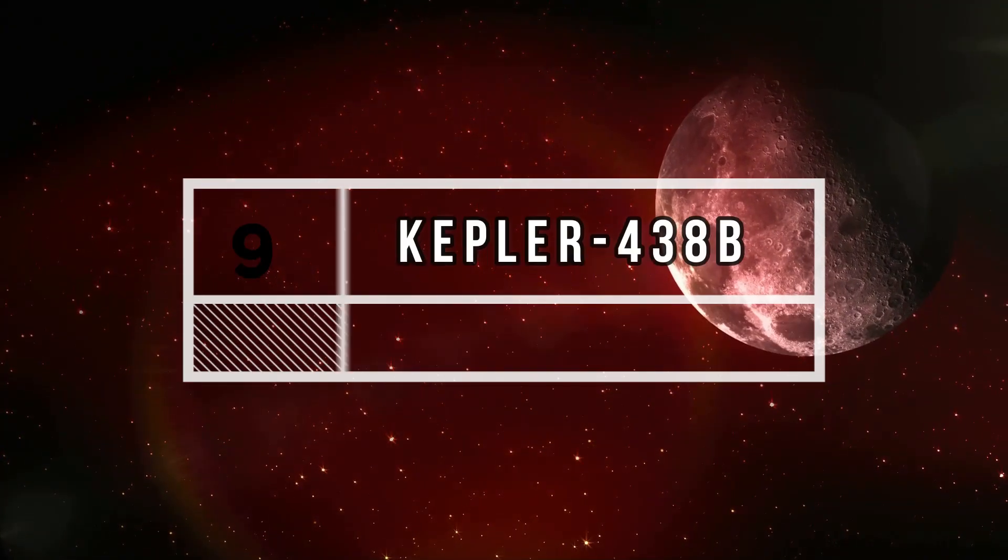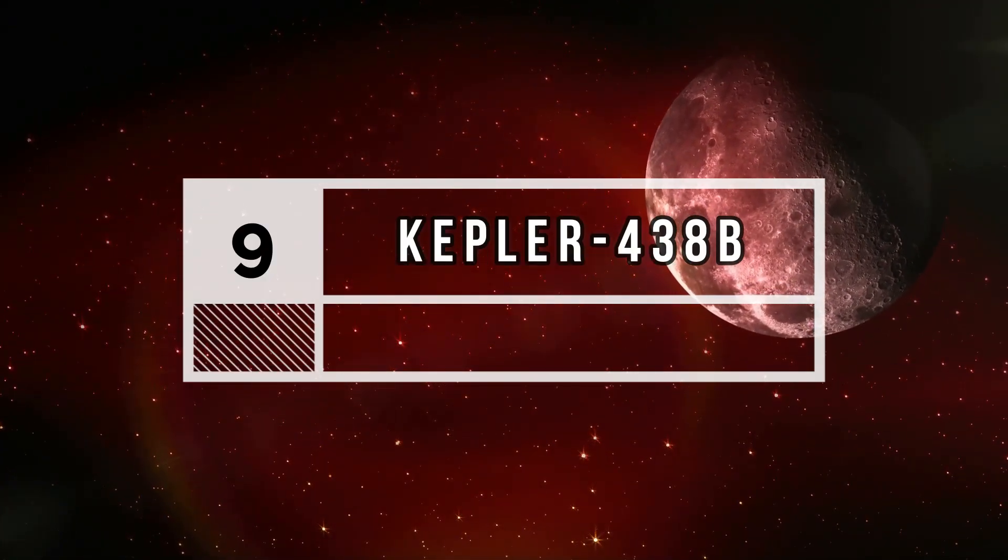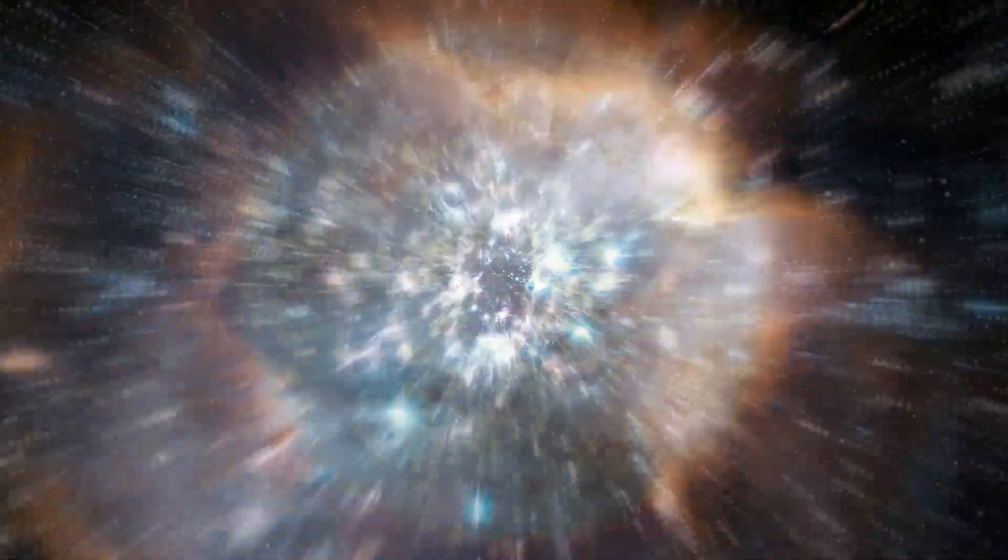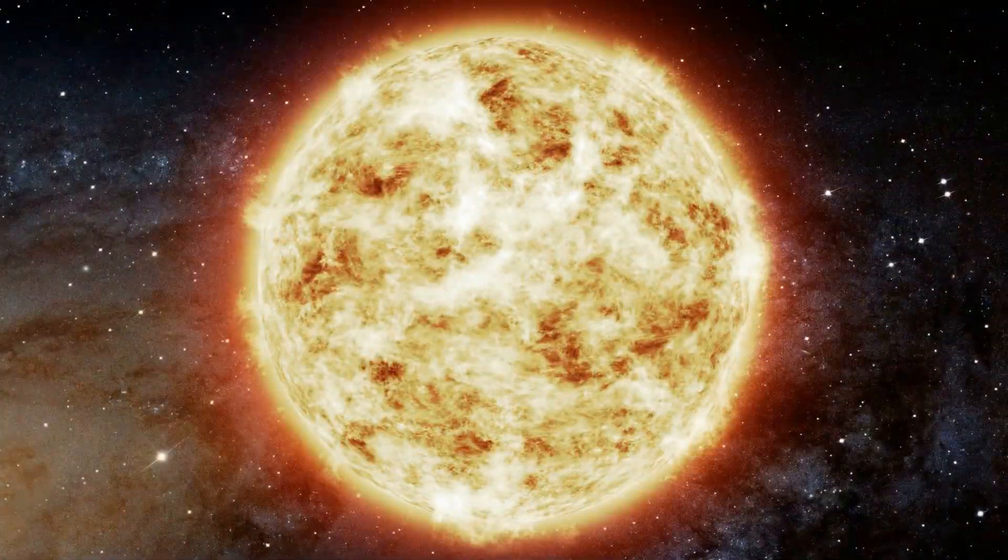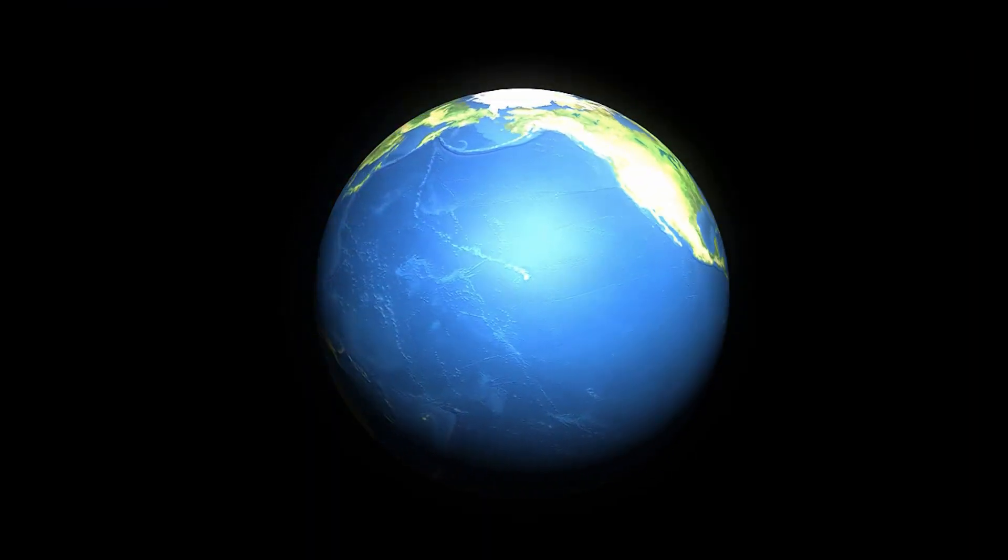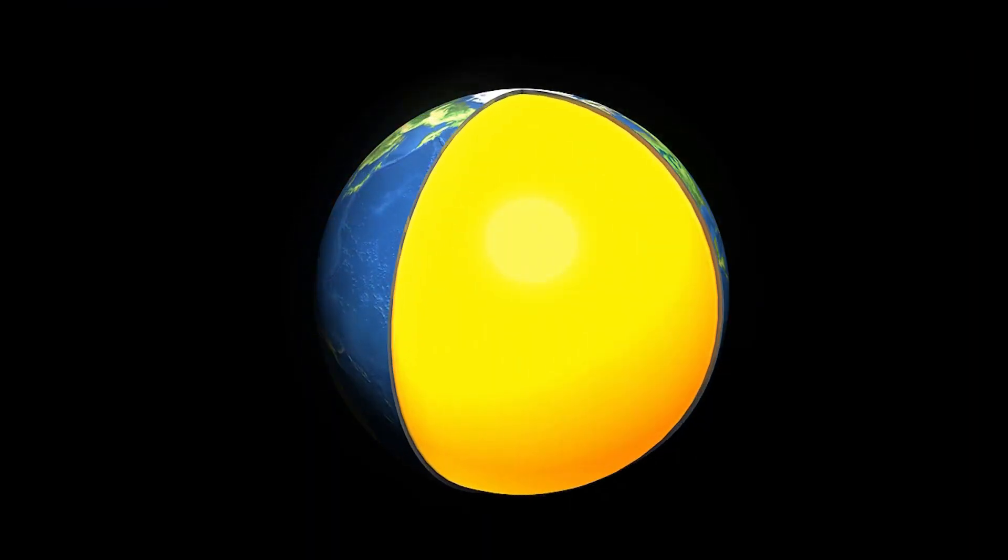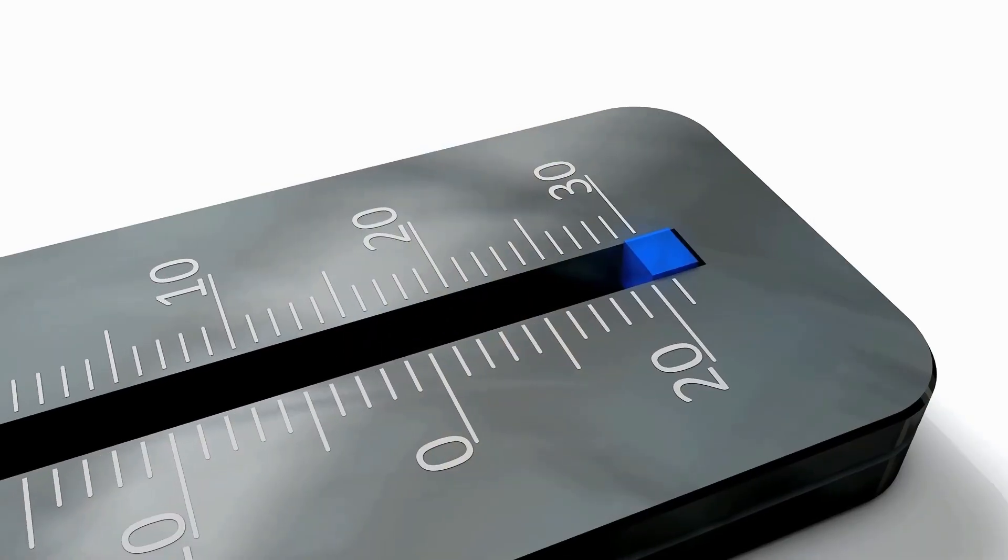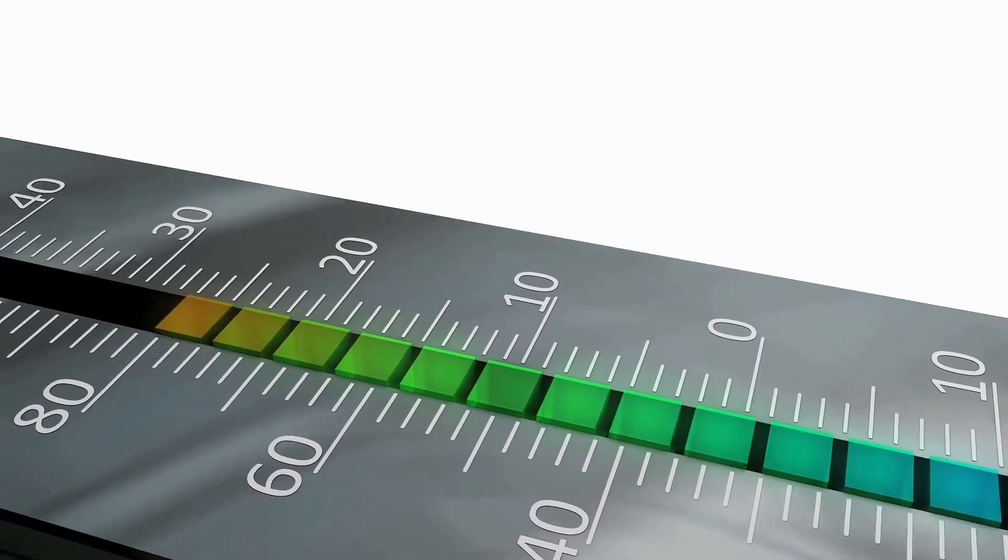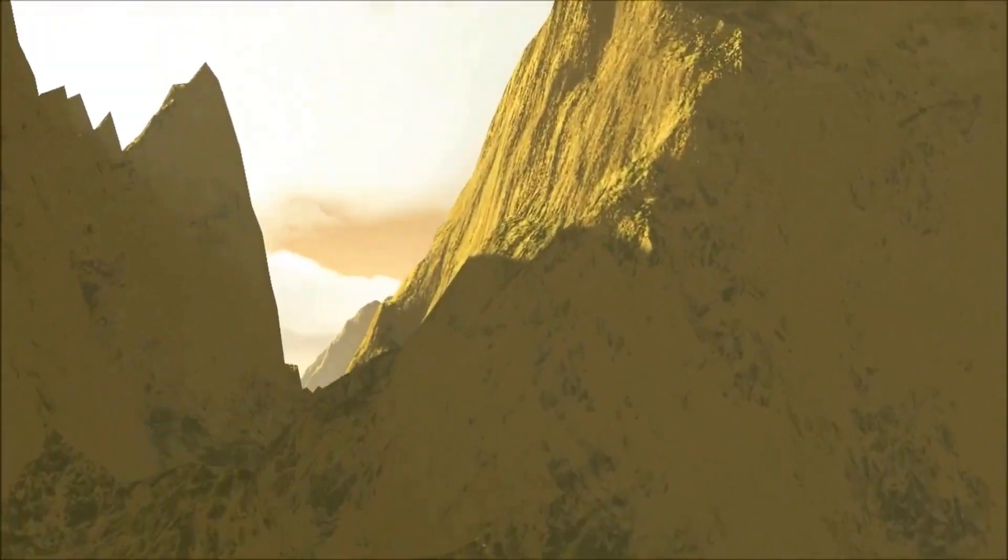Number 9: Kepler-438b. This planet is found in Lyra constellation. It orbits a red star, which is smaller than our sun. Kepler-438b gets 40% more heat than the Earth and is about 12% larger than the Earth. Its temperature is 140 degrees Fahrenheit, which is not suitable for humans, but other life can exist there.